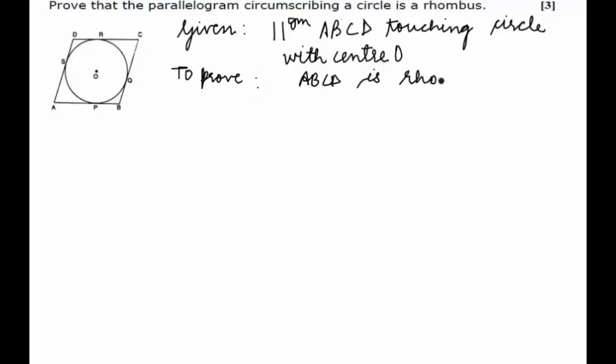We know that a rhombus is a parallelogram with all sides equal. Therefore in this question, where ABCD is already given as a parallelogram, I will just focus on proving all the sides equal. Also, in a parallelogram, two pairs of opposite sides are equal — AB equals CD, and AD equals BC. So to make all four sides equal, I will just focus on proving two adjacent sides equal, let's say AB and BC.